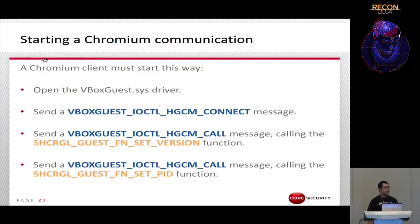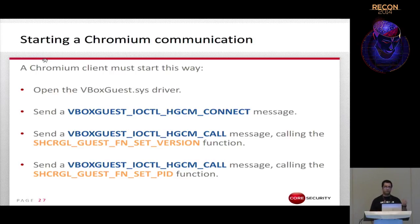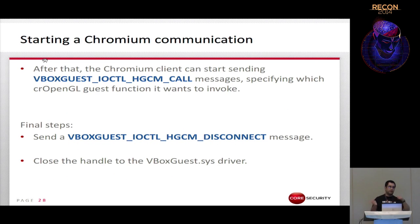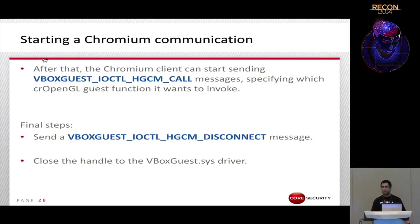Once the communication is established, the Chromium client can start sending all the HGCM Call messages it needs to invoke functions from the 3D acceleration service. When it decides to close the connection, it sends an HGCM Disconnect message and then closes the handle to the bbox guest driver.